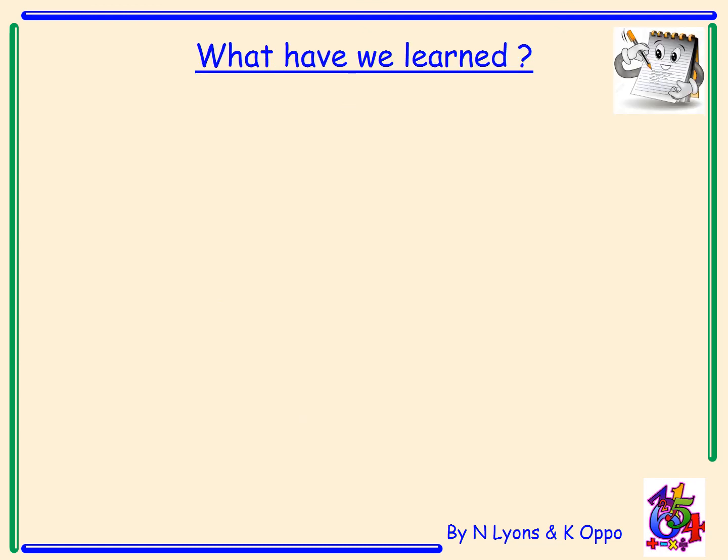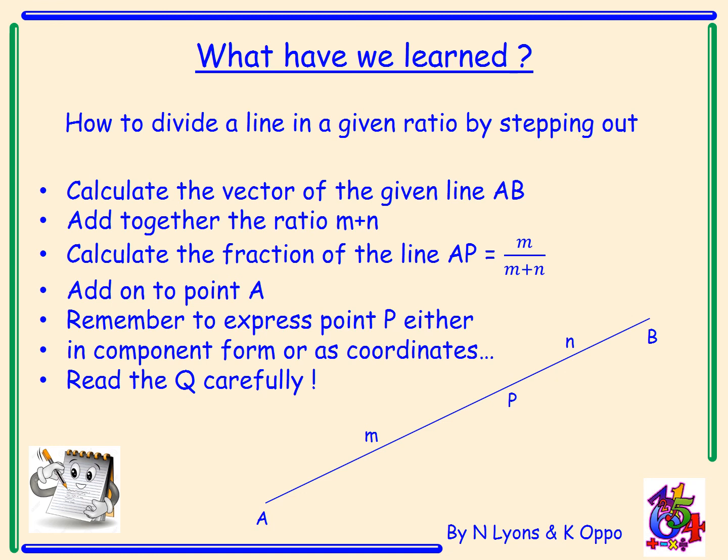So what have we learned? Well, we've learned how to divide a line in a given ratio by stepping out. Step 1: Calculate the vector of the given line AB. Step 2: Let's add together the ratio M plus N. And then you calculated the fraction of the line. We did it in two steps. Find one step, and then find M steps. That's the same as writing M divided by M plus N. You add on that vector to the point A where you started. And remember to express point P, the point you found, either in component form if it asked for it in component form, or as coordinates. You really must read the question very carefully. So take time to jot this down into your jotters. You'll be able to pause this video now, and then we'll see you for the next lesson in class.